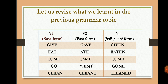Now there are three forms of verbs in grammar: V1 form, V2 form, and V3 form. In V1 form, the base form of the verb will be given. In V2 form, the past form of the verb will be given. In V3 form, the -ed or -en form of the verb will be given.